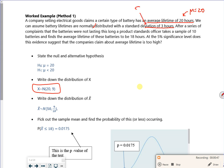After a series of complaints that the batteries were not lasting this long, so I'm thinking I'm going to be looking at a value less than 20, we take a sample of 10, so n equals 10, and find the average lifetime of these batteries to be 18 hours, so x-bar equals 18.